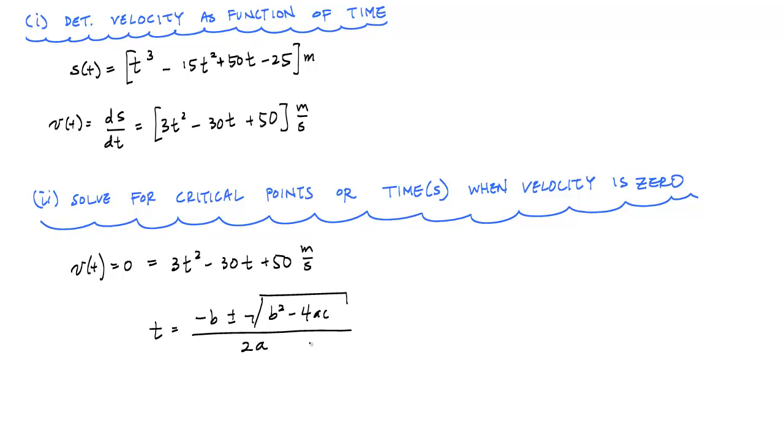Here's the quadratic formula. Now let's just plug and chug the variables, the values that we need here. When I go through the calculations, the roots of this are 7.887 seconds and 2.113 seconds.